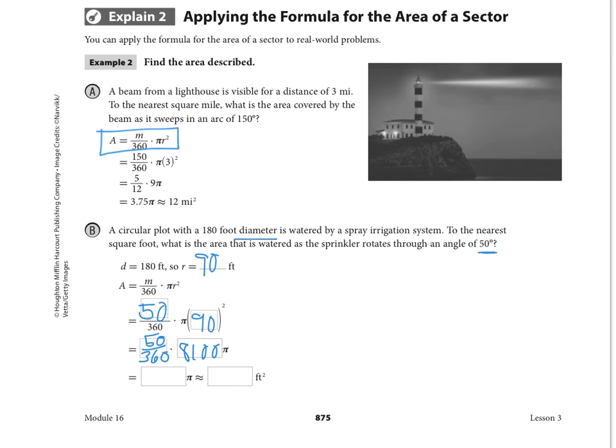This time we're going to take our calculators, multiply 50 times 8,100, and divide by 360 because we want to get a single nice number in front of π to simplify. And that is 1,125π, or an approximation. And this is to the nearest square foot, so 3,534 feet squared.